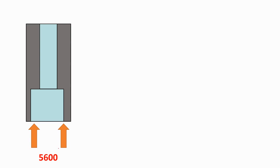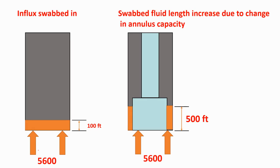Formation pressure before you pull out is 5600 psi. When you pull out all the way to surface, let's say during pull out there was a swab kick of 100 feet. Due to this swab kick, will the formation pressure change? No, formation pressure will not change because of the swabbing effect. The kick occurred because of a drop in BHP, not because of an increase in formation pressure.